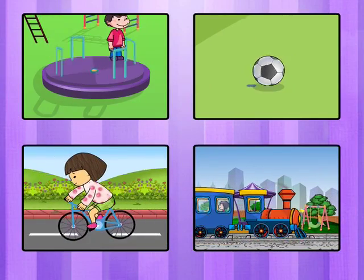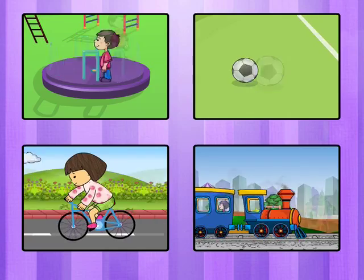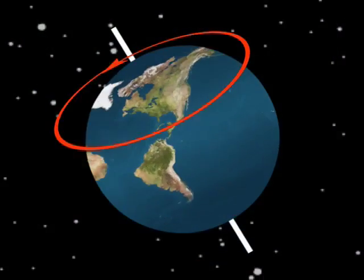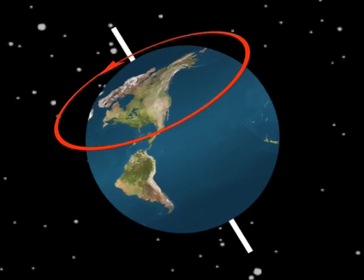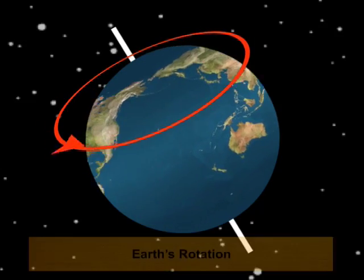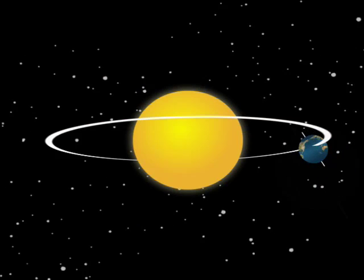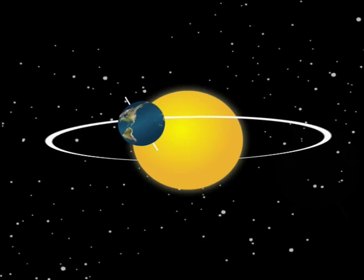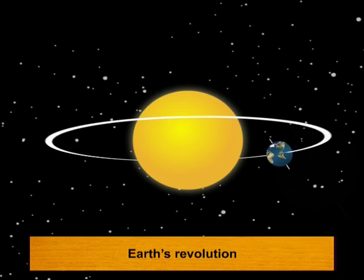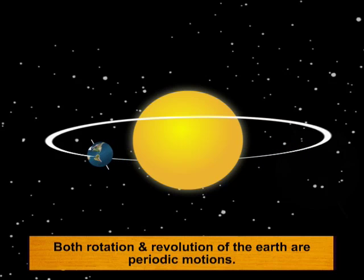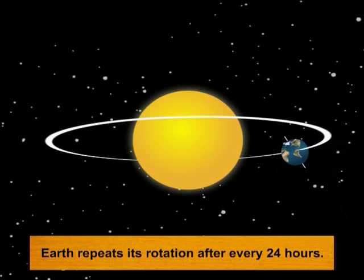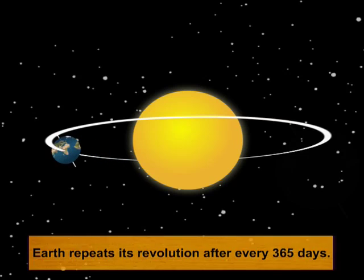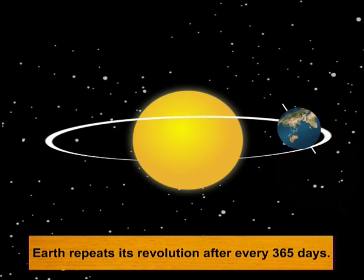Now let's study the nature of motion of our Earth. Earth moves around its own axis — that is, it is in circular motion around its own axis — and this motion is also known as Earth's rotation. Simultaneously, Earth also moves around the Sun while it rotates about its own axis — this motion is known as Earth's revolution. Both rotation and revolution of Earth are periodic motions: Earth repeats its rotation after every 24 hours, and repeats its revolution after every 365 days.